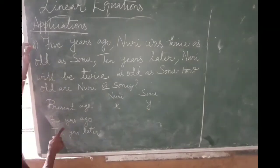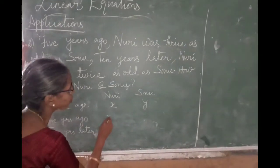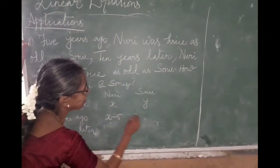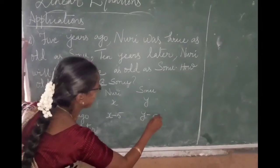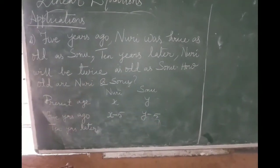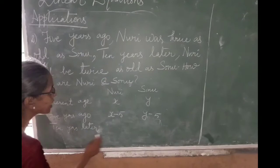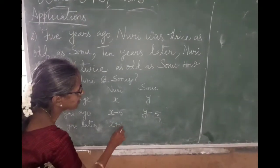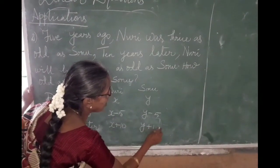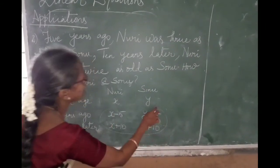So here, present age I have taken Noori's age as x, Sonu's age is y. 5 years ago, what will be Noori's age? X minus 5, Y minus 5. Next, 10 years later, Noori will be x plus 10 and Sonu will be y plus 10. Now we have written this one.